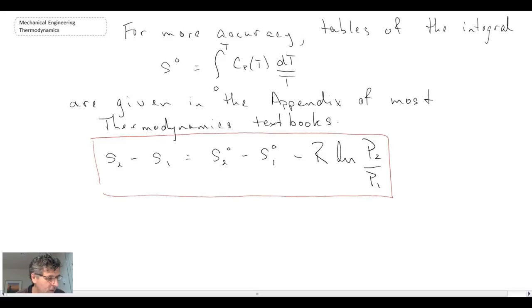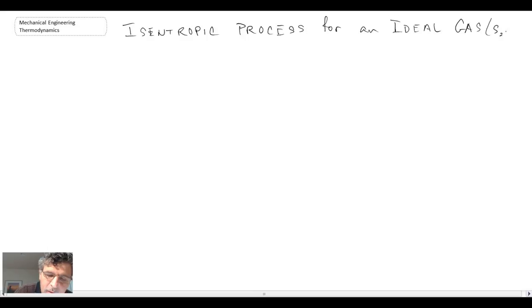The last thing that I want to do is I want to take a quick look at an isentropic process for an ideal gas. Now remember we said an isentropic process was one where there is no change in entropy. And consequently, what we can write is that S2 is equal to S1.